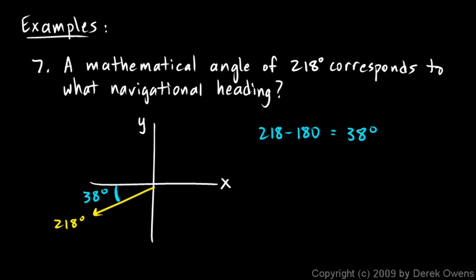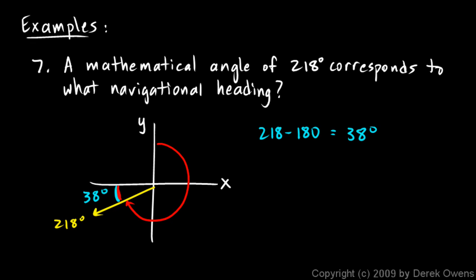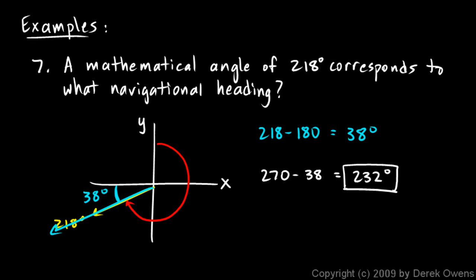Now let's think about the navigational heading. That would be 90, 180, 270 — but instead of going all the way around to 270, we're going to stop 38 degrees short of 270. So my answer will be 270 minus 38, which is 232 degrees. So that direction is a heading of 232 degrees.